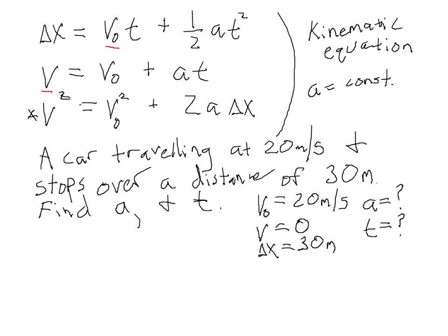So v² equals v₀² plus 2aΔx. v is zero, v₀ is 20 meters per second, plus 2a (a is what we're looking for) times Δx. Δx is 30 meters. So we have zero equals 400 meters squared over seconds squared, plus 2 times 30 is 60, 60 meters times a.